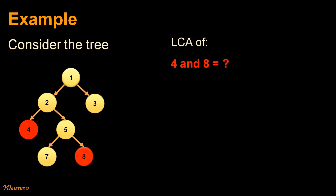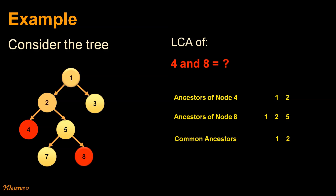Let's understand the problem using an example. We are given this binary tree and nodes 4 and 8. We have to find the lowest common ancestor of these two nodes. All ancestors of node 4 are 1 and 2. All ancestors of node 8 are 1, 2, and 5. The common ancestors of these two nodes are nodes 1 and 2, and the lowest common ancestor is 2 because it is the lowest node in the tree which is an ancestor of both nodes 4 and 8. Any other common ancestor of 4 and 8 will be at a higher level than node 2.